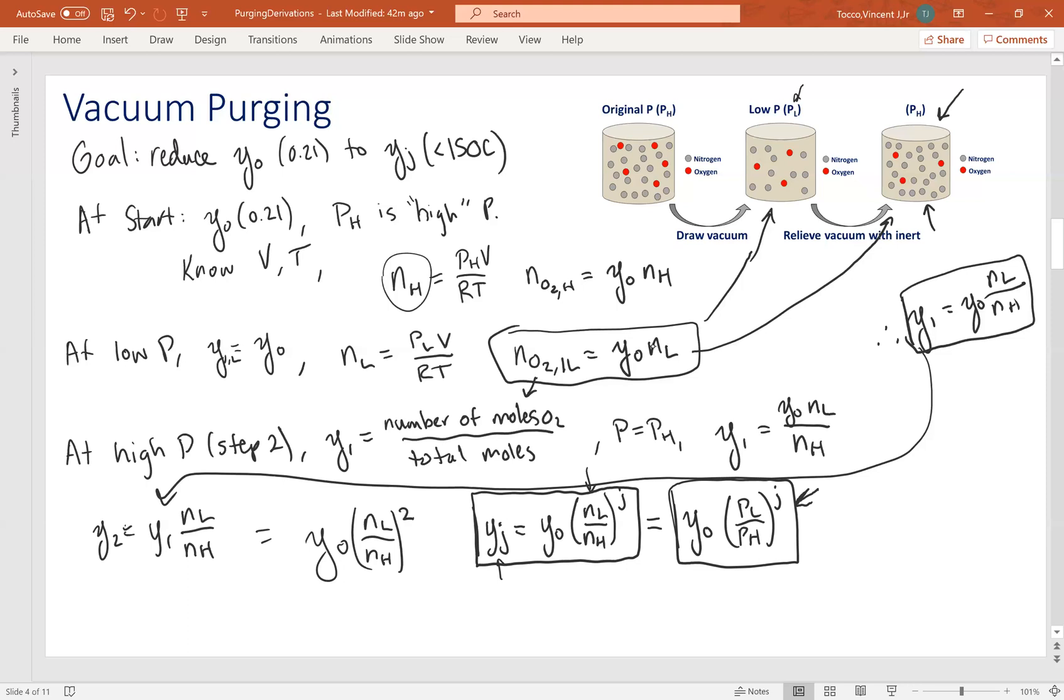Now another question that you might be interested in as the engineer is how much nitrogen do you need for this process? How much inert total do you have to add? So the only part where you need inert is in the second to third step. So you have to add a certain amount of N2 here. You might ask yourself, how much N2 do I need to add? Well, for one cycle, we can say that we had to add enough moles of gas such that we get back to our high pressure. So we can use the ideal gas law and say that P high minus P low times V divided by RT is the number of moles of nitrogen that we need to add for a single cycle. To get the total number of moles of nitrogen that we need, we simply have to multiply it by J cycles. This is equal to the total number of moles nitrogen needed.